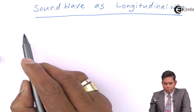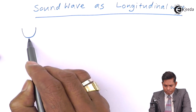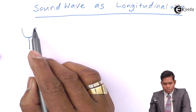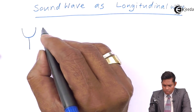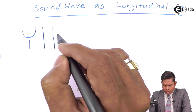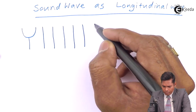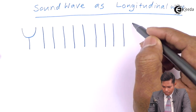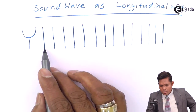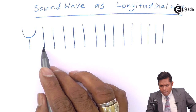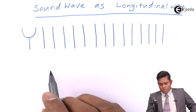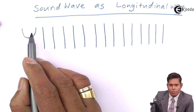Now, I will consider a tuning fork here. This is set into vibration. Before this tuning fork is vibrated, the air was still and the layers are equally spaced. The distance between any two layers is the same, so they are equidistant. This is the case when the tuning fork is not vibrated.